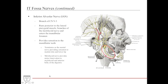The inferior alveolar nerve is one of the major structures of the infratemporal fossa, frequently tested because of its important relationship with the mandibular canal. It runs posterior to the lateral pterygoid muscle, branches off to give the mylohyoid nerve, then enters the mandibular foramen. It provides sensation to the mandibular teeth, and the mental nerve exits to provide sensation to the lower chin and medial lip area. The mylohyoid nerve provides muscle innervation to the mylohyoid and the anterior belly of the digastric.